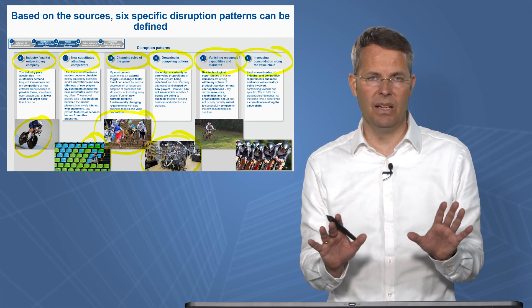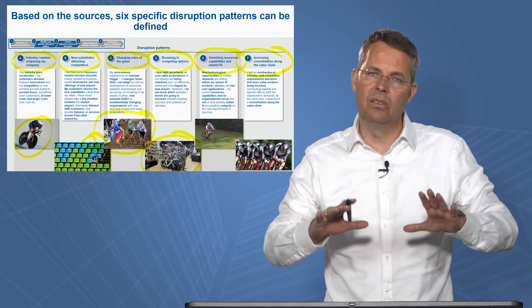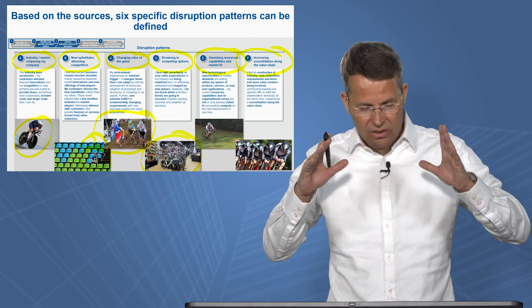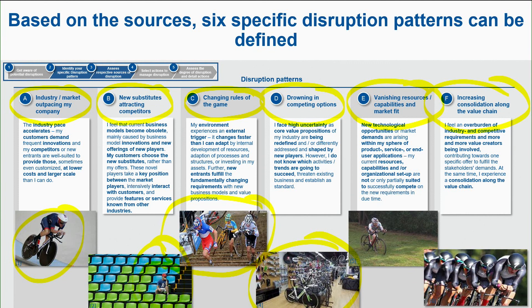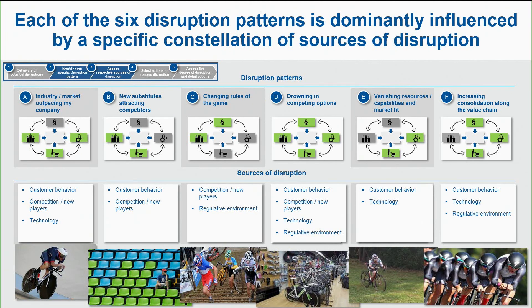Don't worry if you don't fully understand these patterns yet — we'll go deeper into each one. This is step two: identifying the specific disruption pattern. In the first pattern, industry and market outpacing your company, technology is the starting point, but then customer and competitor behavior also changes. The fashion market is a typical example.